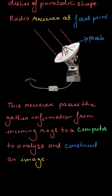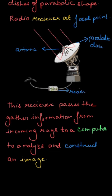The information is sent to the computer, where it is analyzed and an image is constructed. The various parts are: the parabolic dish, the antenna, the dish, the receiver, and the computer or recorder. So these are the various parts used in the construction of a radio telescope.